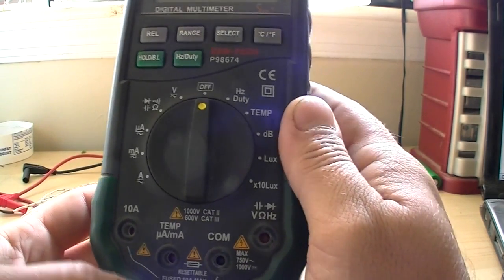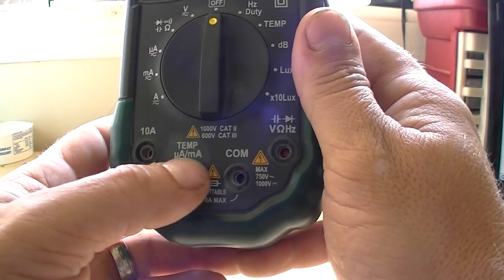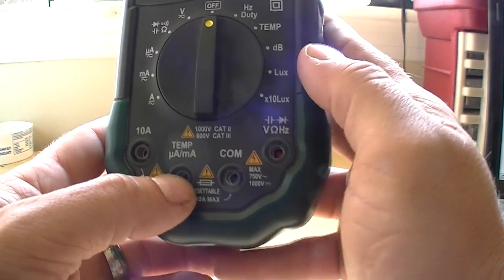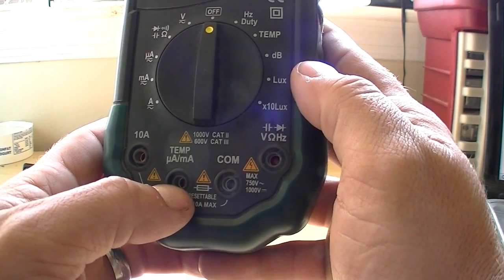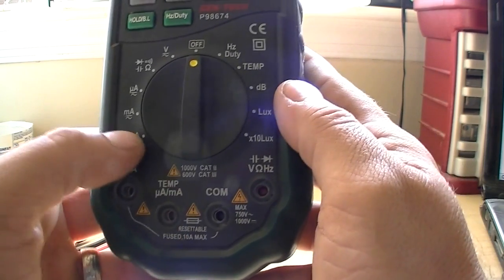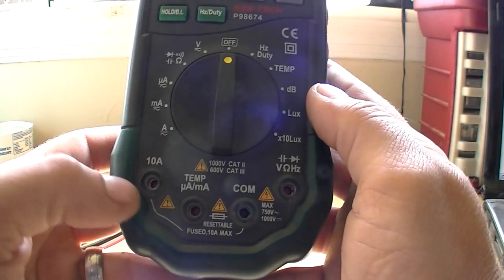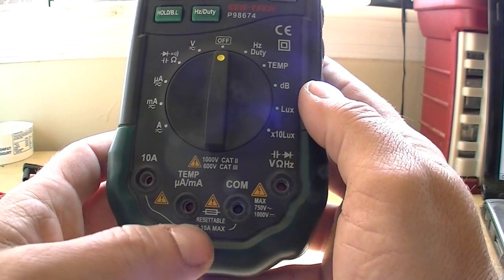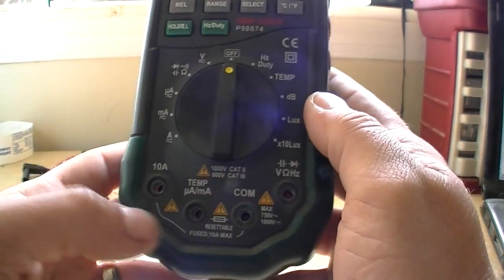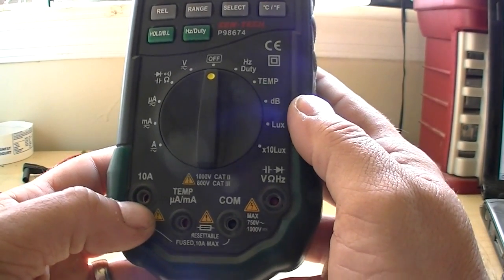For the amperage or the current testing, you have two areas. You can either do milliamp or microamp from this plug here which has an automatic resettable fuse in it. I believe it reads up to 400 milliamps. Over that you'll switch it to the amp setting which goes into a 10 amp plug which has a 10 amp fuse in the back by the battery that is replaceable if you go over that.